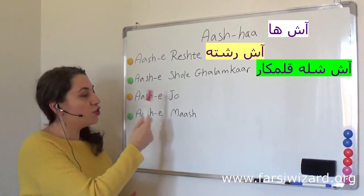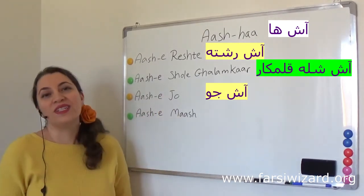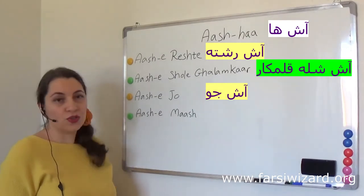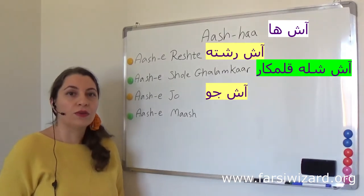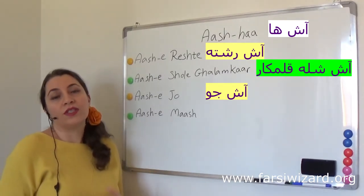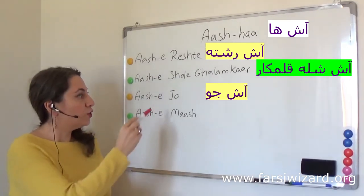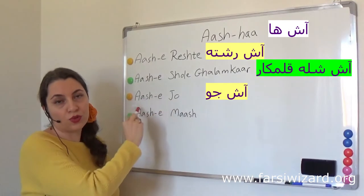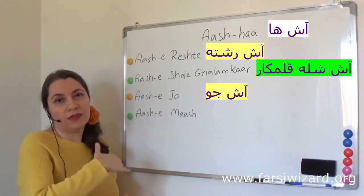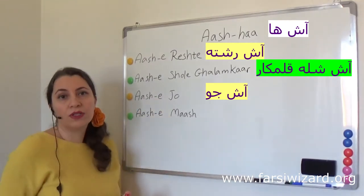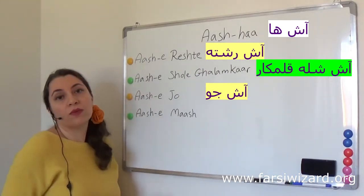Now let's go to Ash-e-Jo. This word here means barley, so Ash-e-Jo is barley Ash. It's quite popular, especially in the western and northern sides of Iran where the winters are quite cold. We also have Supejoh, which is another popular dish — it's a little more watery and less dense compared to Ash-e-Jo, and we don't put herbs in it, but again it's made with barley.